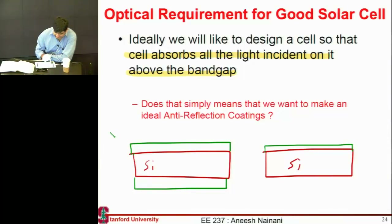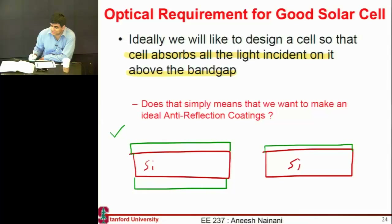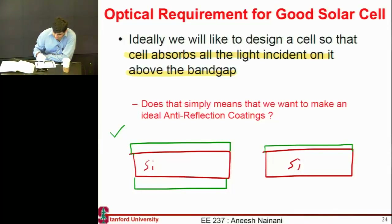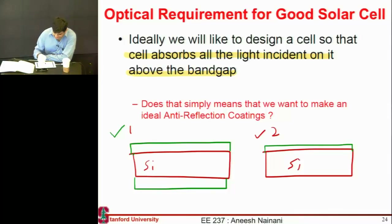How many people think the symmetric design with coatings on both sides is better? How many think only one side is better? Yisheng is saying that if I have a yellow photon coming in, it would get in and then leave out — and the presence of the anti-reflection coating on the back could help that photon escape.